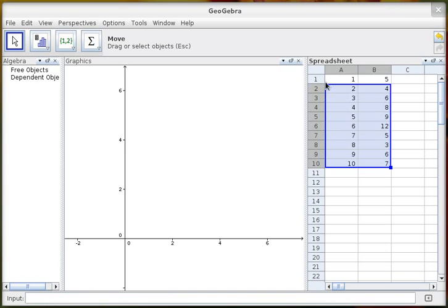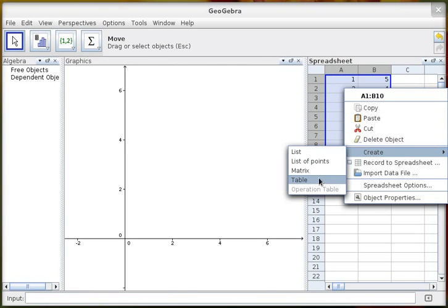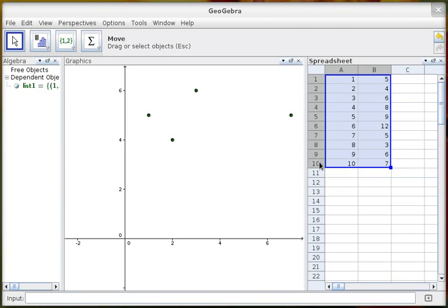Then you just select this and right click and go to create. You can do matrices and all this kind of stuff in there, but you just want a list of points.